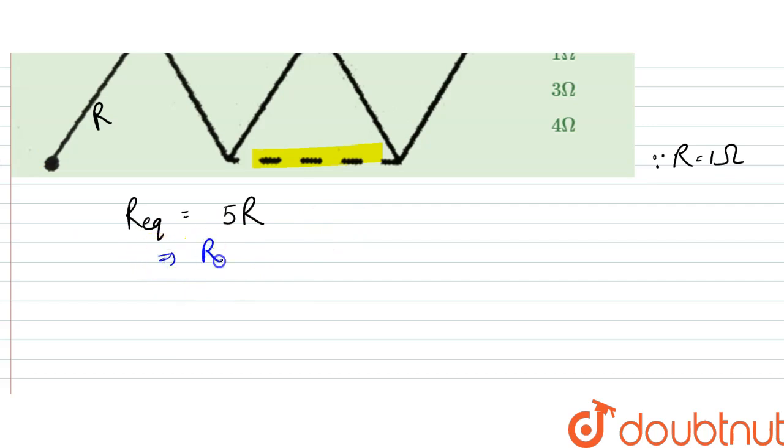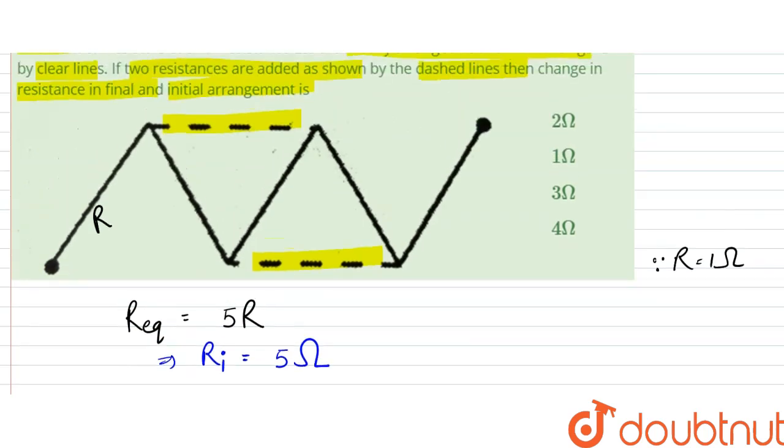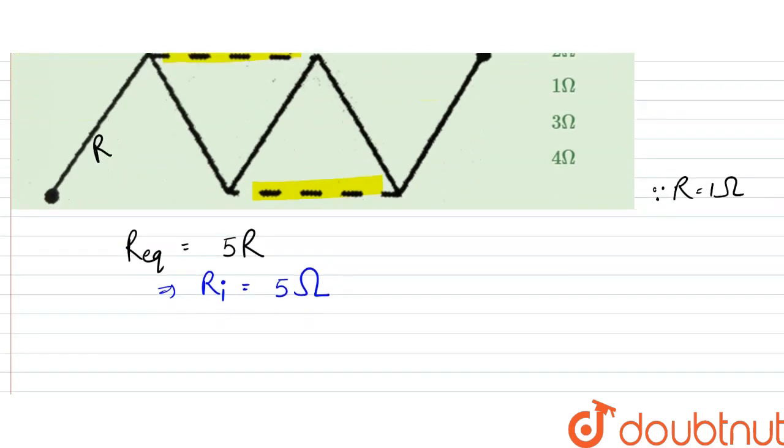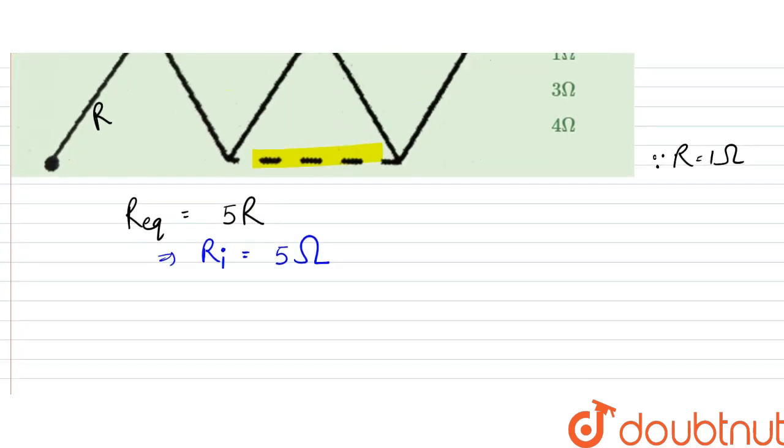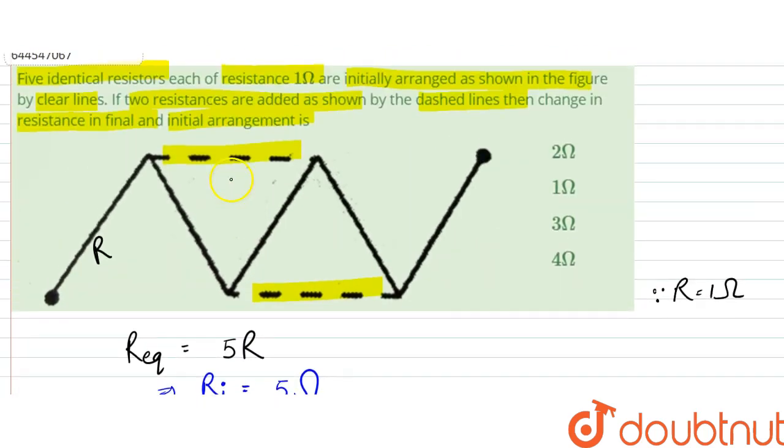We can say that R initially would be equal to 5Ω. Later on, what we have are the dashed lines also, which are also of 1Ω. So what will happen is, see, this is 1Ω, this is also 1Ω, 1Ω, 1Ω...